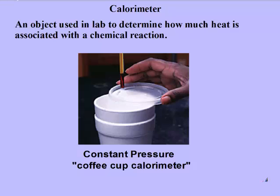Today we're going to be talking about calorimetry. In calorimetry, we use a calorimeter. A calorimeter is an object used in lab to determine how much heat is associated with a chemical reaction. When we have a constant pressure calorimeter, which is what we'll be using, we refer to that as a coffee cup calorimeter, because most of the time it's just made out of two coffee cups.